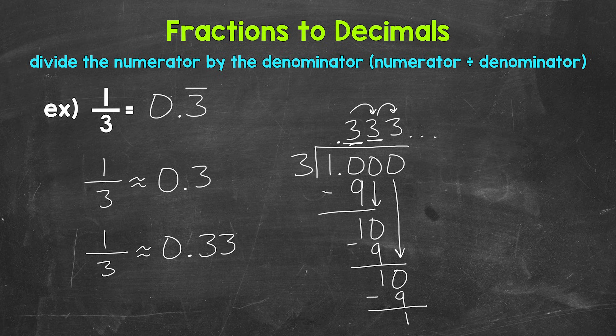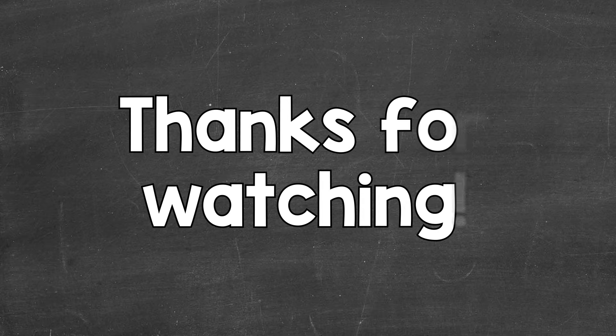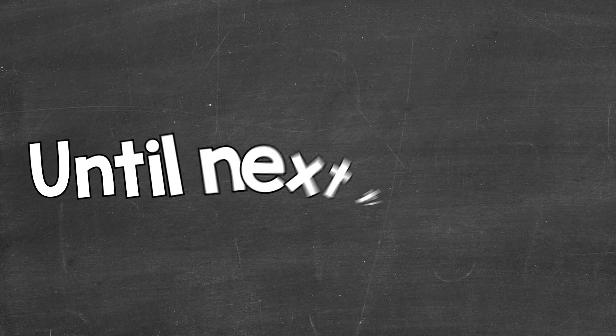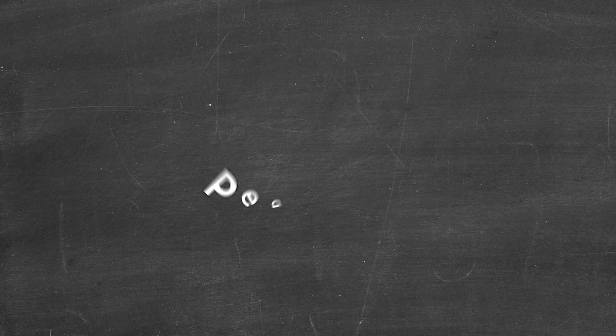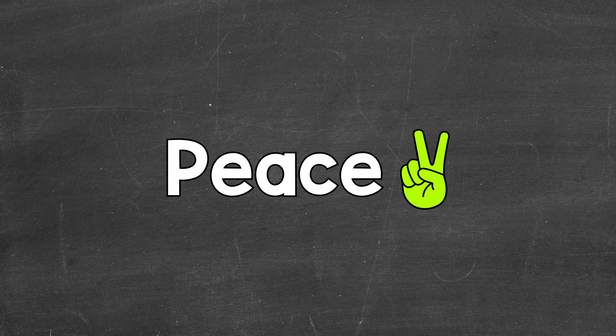So there you have it — that's how to convert 1 third to a decimal. I hope that helped. Thanks so much for watching. Until next time, peace.